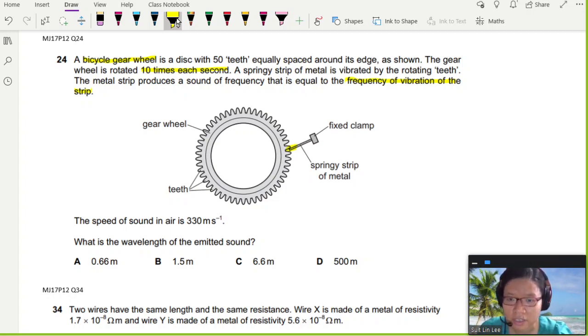So you're given the speed of sound in air. What is the wavelength of the emitted sound? So this is a large hint that you are probably going to have to apply v equals f lambda. But before we use the equation, we actually need to be able to find your f.